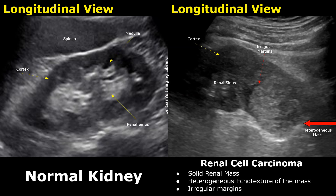Here is another case showing a heterogeneous mass in the lower pole of the left kidney. It also has irregular and ill-defined margins. Ill-defined margins mean we cannot clearly tell where the border of the mass is. This mass was later confirmed to be renal cell carcinoma.